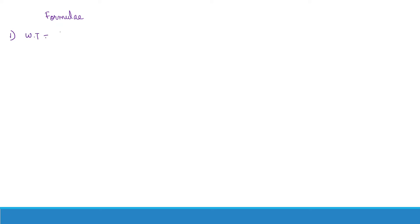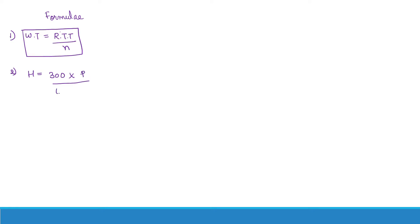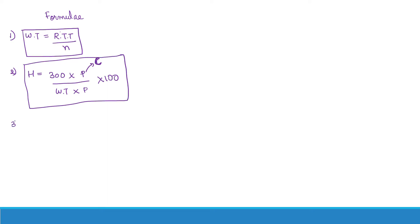Let's note down the formulas related to elevators and escalators as discussed in the last class. The first formula is: Waiting Time (WT) = Return Travel Time (RTT) / Number of Lifts (n). Second is Handling Capacity (H) = 300 seconds × lift car capacity × waiting time × peak hour population / 100. Third is Average Number of Stops (S) = n / (1 − (1 − 1/n)^p).